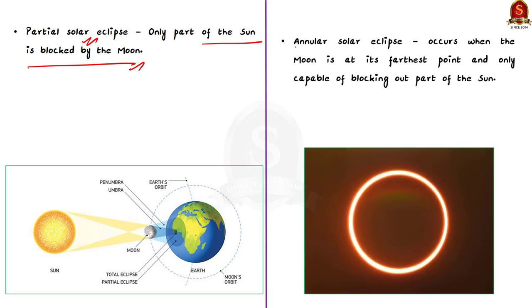Finally, there is the annular solar eclipse. The annular solar eclipse occurs when the moon is at its farthest point in its elliptical path of orbit around the earth. Due to this, it is only capable of blocking out part of the sun, thus leaving the periphery of the sun visible. You can see this image here to understand the annular solar eclipse.